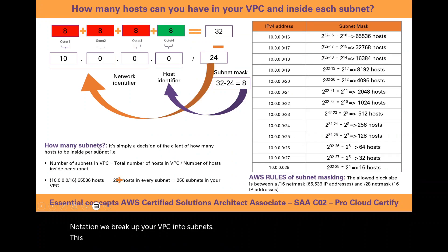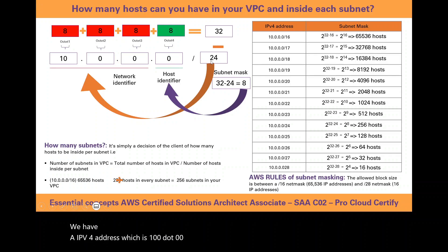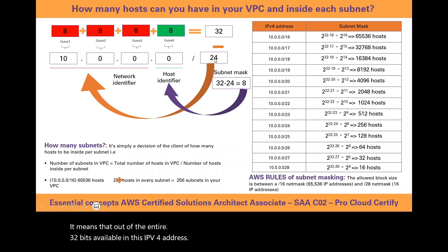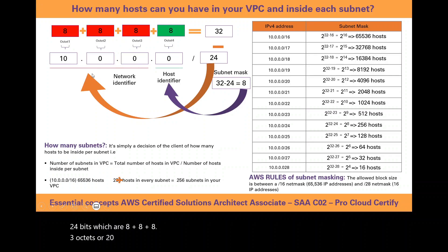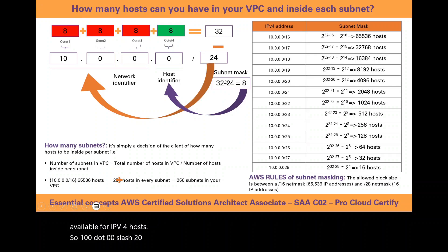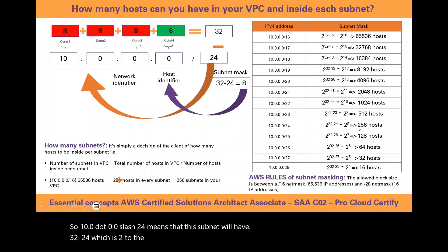For example, we have an IPv4 address 10.0.0.0/24. This means that out of the entire 32 bits available in this IPv4 address, 24 bits — which are eight plus eight plus eight, or three octets — are used as a network identifier, and only 32 minus 24, which is eight bits, is available for IPv4 hosts. So 10.0.0.0/24 means this subnet will have two to the power of eight, or 256 hosts.